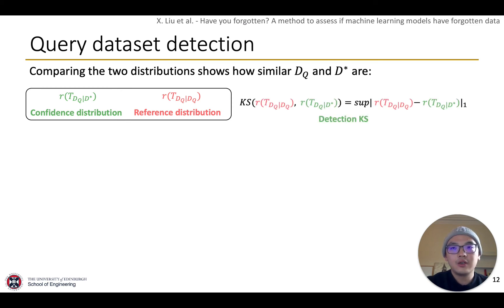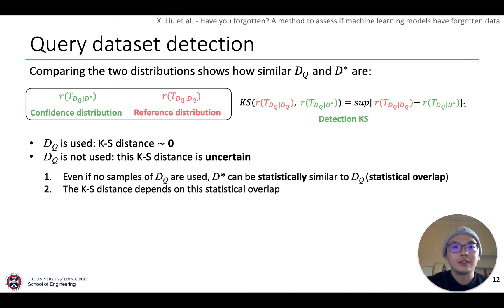If DQ is used to train a model, this detection KS will be close to zero. On the contrary, the detection KS distance is uncertain because even if no samples of DQ are in D star, the two distributions can be statistically similar. It is defined as statistical overlap. In this case, the detection KS distance depends on how much the overlap is.